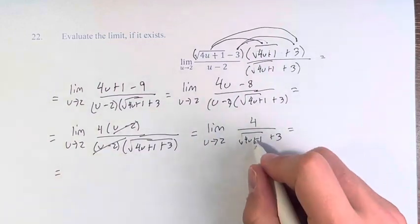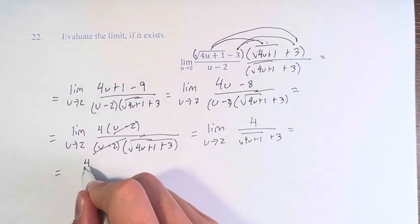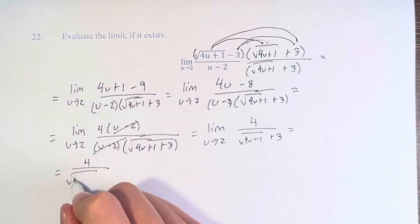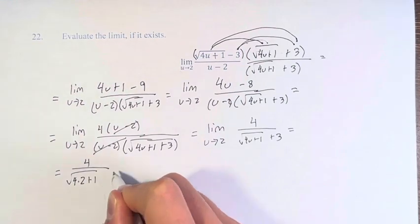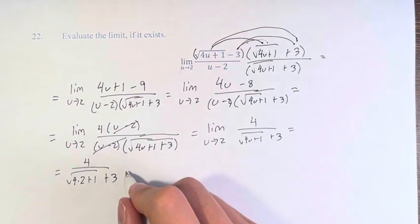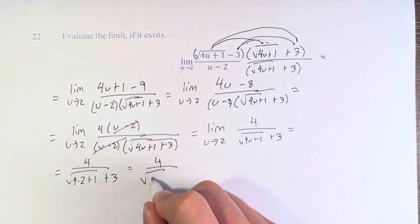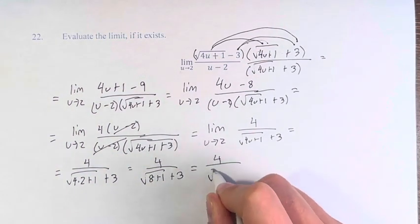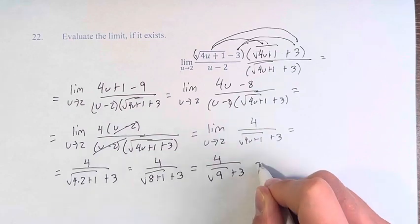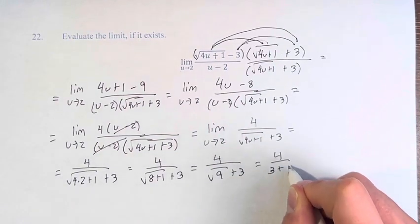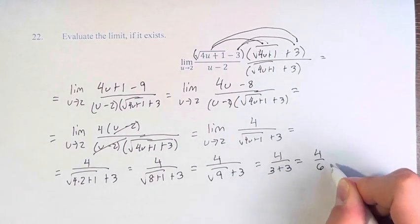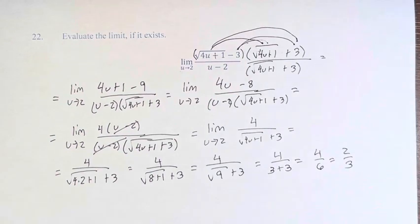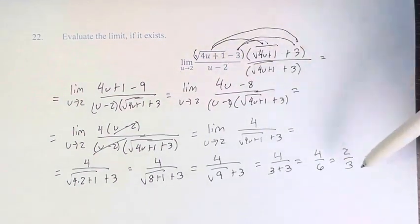Now we can just plug in 2 into our fraction to get 4 over the square root of 4 times 2 plus 1 plus 3. This is 4 over the square root of 8 plus 1 plus 3. 4 over the square root of 9 plus 3. 4 divided by 3 plus 3, which is 4 over 6, which is 2 thirds. Therefore the value of this limit is equal to 2 thirds.